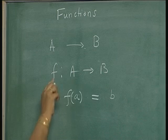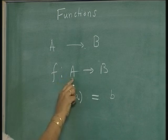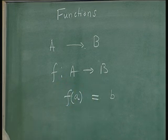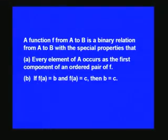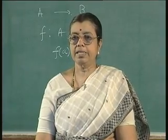A relation consists of ordered pairs where the first component belongs to A and the second component belongs to B. A function F from A to B is a binary relation from A to B with special properties: every element of A occurs as the first component of an ordered pair in F, and if F(a) = b and F(a) = c, then b = c. These two properties must be satisfied by the definition of a function.